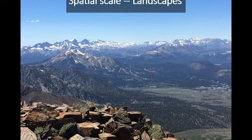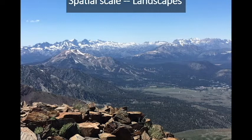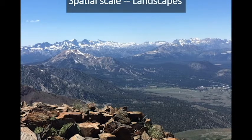Water flows from the high country down into the low country. The mountains force moisture in the atmosphere up and cause it to condense, creating gradients of rainfall as well as temperature. Fires can spread from one of these ecosystems into another. There is the typical ecological interaction here — it's just occurring at a much larger spatial scale.